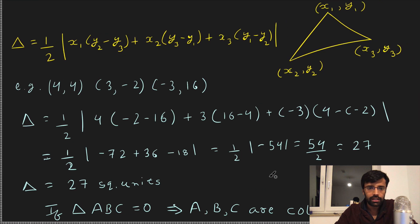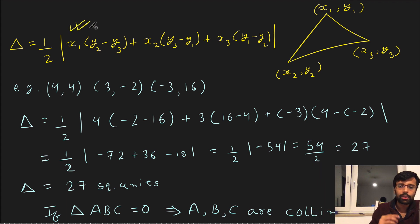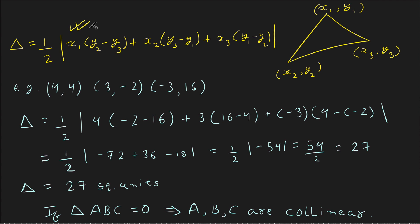Now, the second method: using triangle area. If we have three points, we can compute the area of the triangle they form. The formula is: Area = (1/2) × |x1(y2 − y3) + x2(y3 − y1) + x3(y1 − y2)|. If the area is zero, the points are collinear. The derivation is in the NCERT Class 10 book using trapeziums.